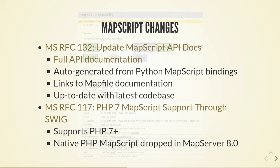On to MapScript changes. There are lots of MapScript languages — Python, PHP — and now they're all generated using SWIG, so they're all consistent. This means we can have consistent MapScript API docs, and in the new docs for version 8 all the docs are generated from the Python SWIG bindings so they're always up to date. Previously lots of functions hadn't been kept updated, but now as they're auto-generated from the codebase it's easier to maintain. PHP 7+ is now supported from MapServer 8, and the native bindings are gone.